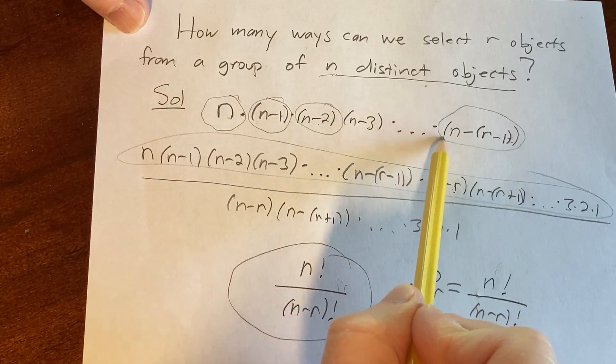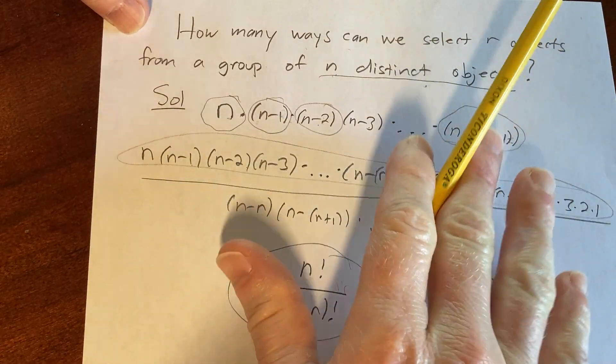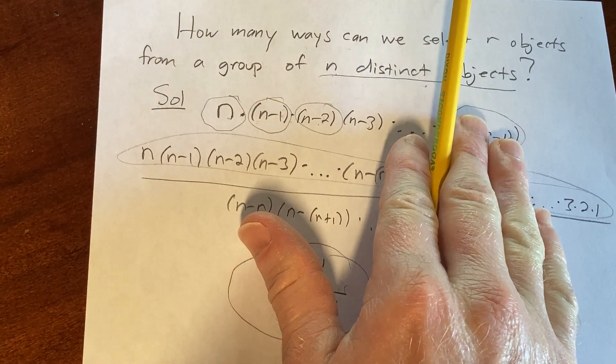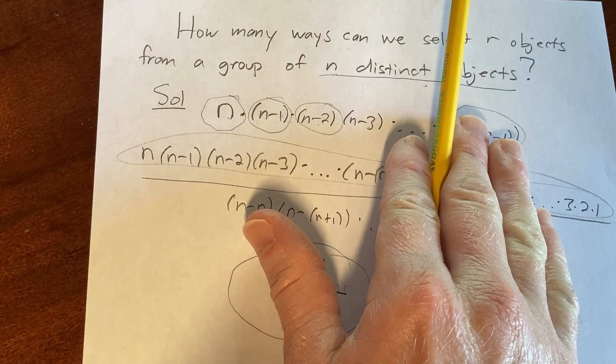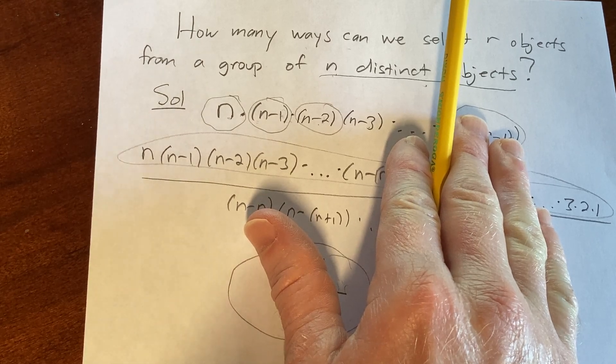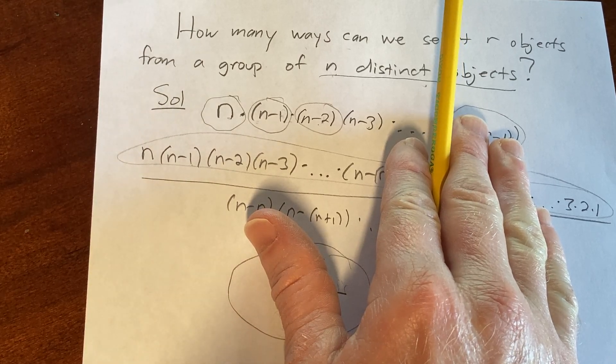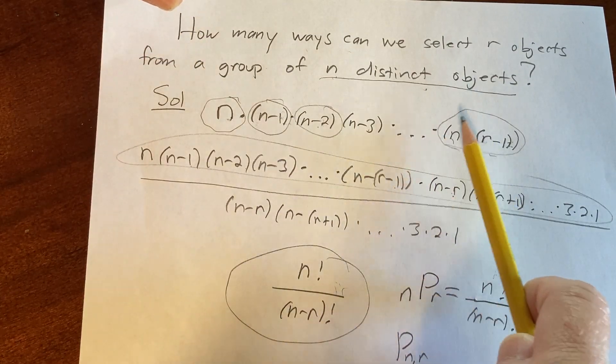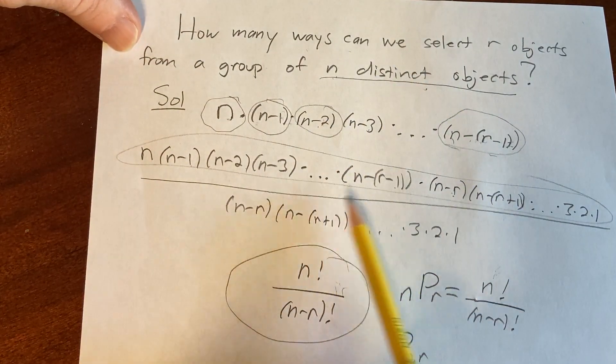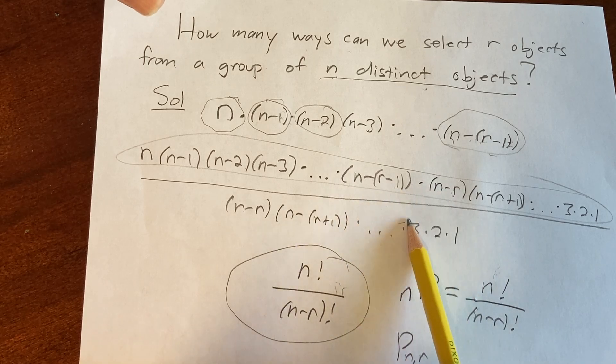You've already picked r minus 1 objects. Before you write this down, you've already picked r minus 1 objects. So what do you have left? You have n minus r minus 1 objects left. So there's n minus r minus 1 ways to choose the rth object. And then what we did here is we basically completed the factorial.